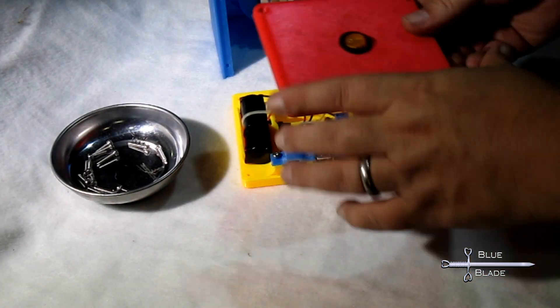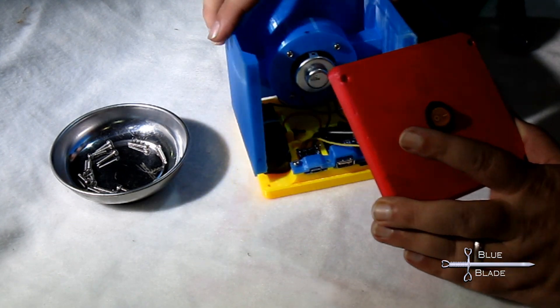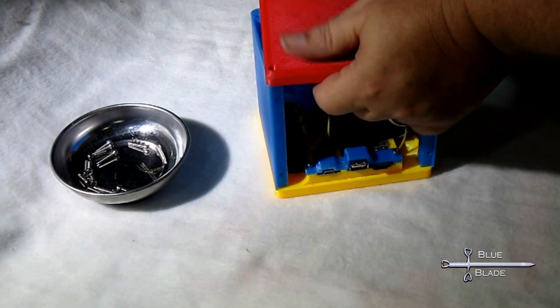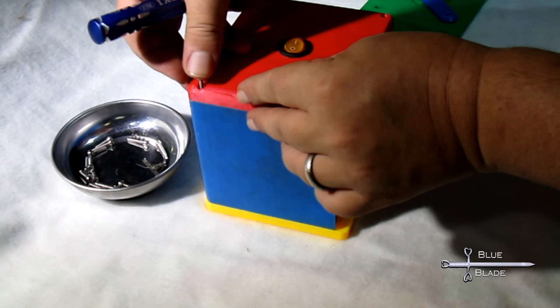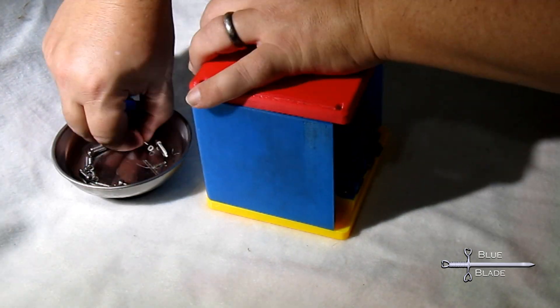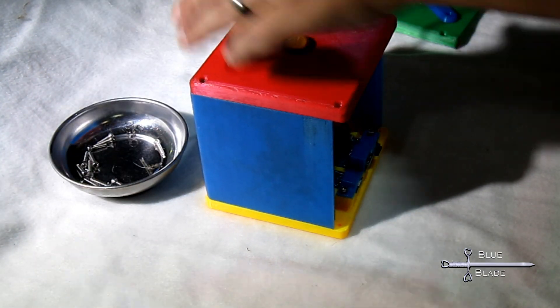Now bolt it all together. Stack the midsection on the bottom plate and then add the top plate. Using the longer 3 millimeter bolts, secure with two bolts at the front of the top and then two at the front of the bottom.